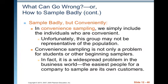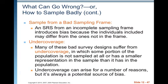Sample badly, but conveniently. In convenience sampling, we simply include the individuals who are convenient. Unfortunately, this group may not be representative of the population. Convenience sampling is a widespread problem in the business world — the easiest people for a company to sample are its own customers. Sampling from a bad sampling frame introduces bias because the individuals included may differ from those not in the frame. Many of these bad survey designs suffer from under coverage, in which some portion of the population is not sampled at all or has a smaller representation in the sample than it has in the population. Under coverage can arise for a number of reasons and is always a potential source of bias.